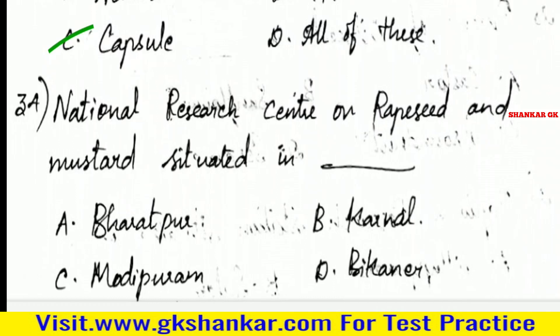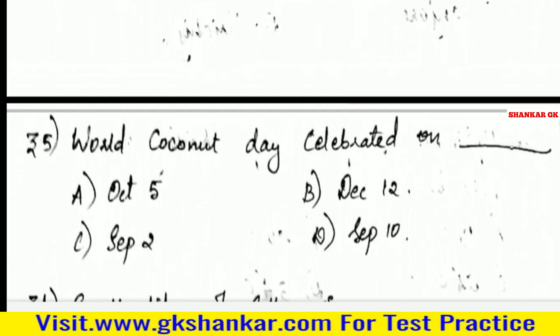Thirty-fourth question: National Research Centre on Rapeseed and Mustard is situated in — A. Bharatpur, B. Karnal, C. Modipuram, D. Bikaner. Answer: A. Bharatpur.